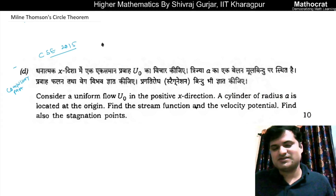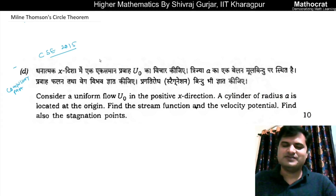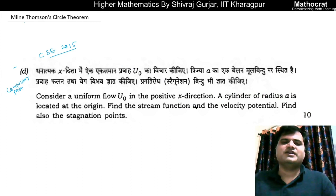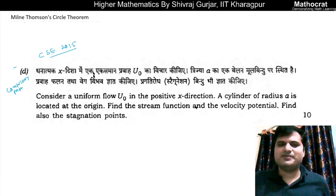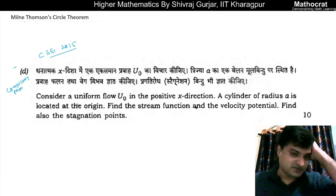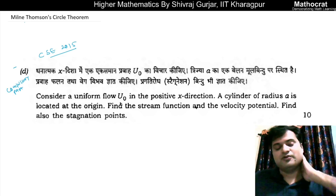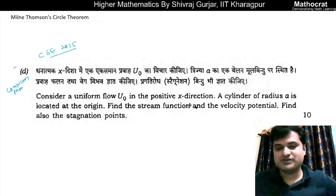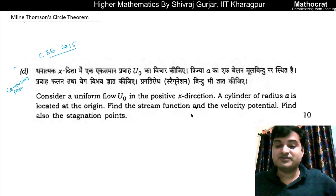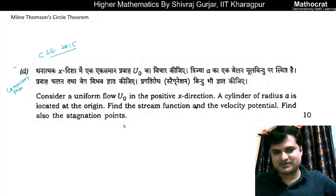We will take up the Milne Thomson Circle Theorem. This is, in fact, an easy theorem. In 2015, there was a compulsory question: Consider a uniform flow of velocity U-naught in the positive x-direction. A cylinder of radius A is located at the origin. Find the stream function and the velocity potential. Find also the stagnation points.